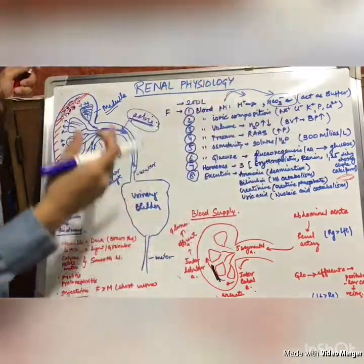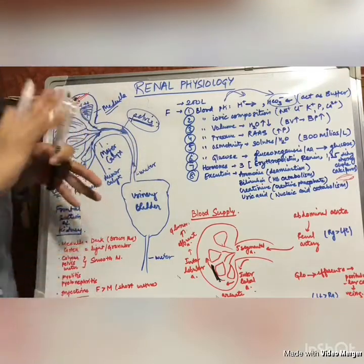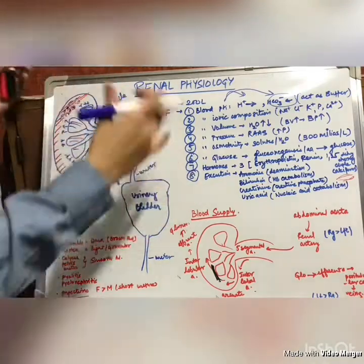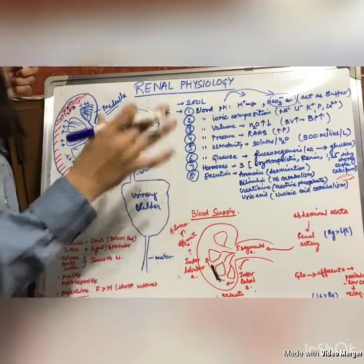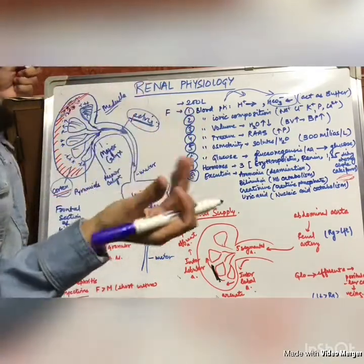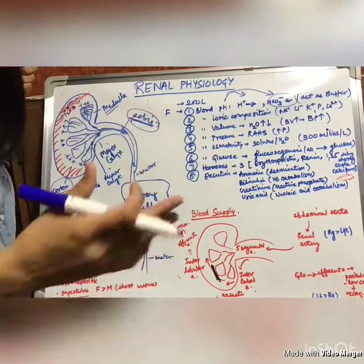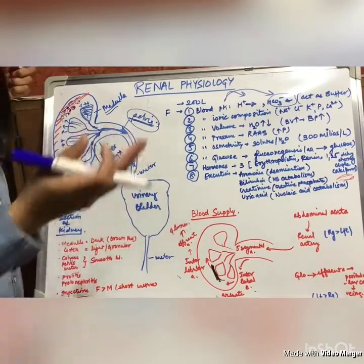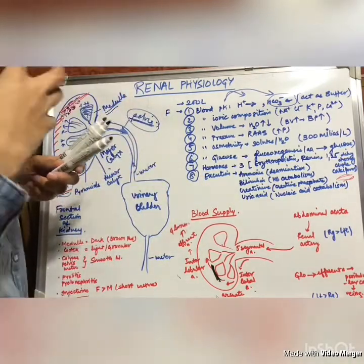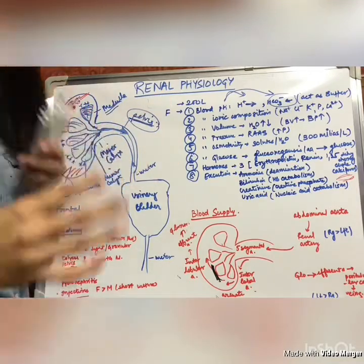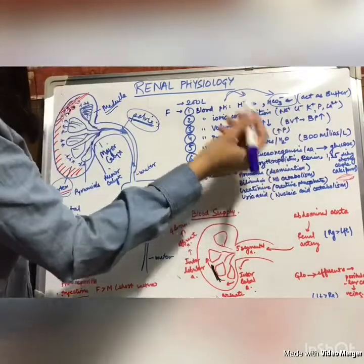The kidney excretes some ions and reabsorbs others to maintain homeostasis. The third function is blood volume — a main function of the kidney. It absorbs or excretes water according to the body's needs. For example, if a person is in a desert without much water, the kidney will reabsorb more water, resulting in less water in the urine — called concentrated urine.